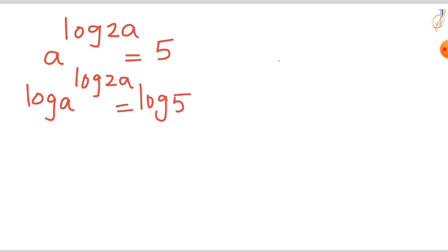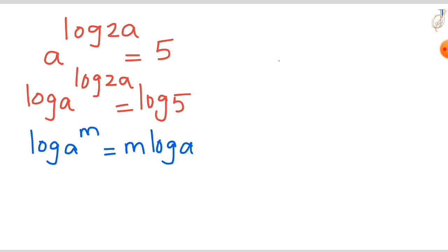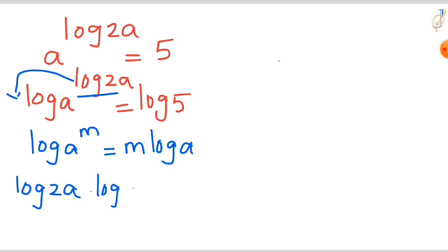The left-hand side is in the form of log a^m. In the power we have log 2a. Using the logarithm property log a^m = m·log a, whatever you have in the power comes in front. So this becomes: log 2a times log a equals log 5.